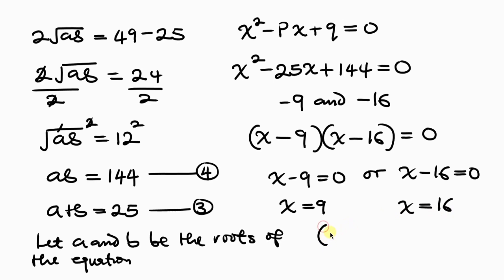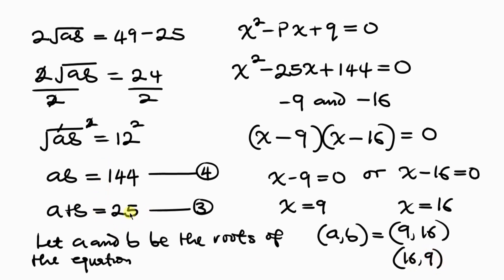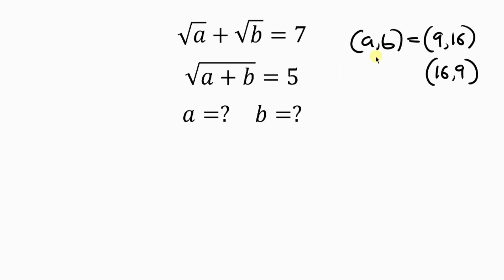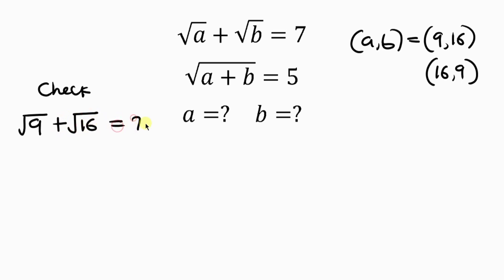So the values of A and B are: A can be 9 and B can be 16, or A can be 16 and B can be 9, since the equations are symmetric. Let's check by plugging the values into the original equations. From equation 1: the square root of 9 plus the square root of 16 equals 3 plus 4, and 3 plus 4 is 7, which equals the right-hand side. This is correct.